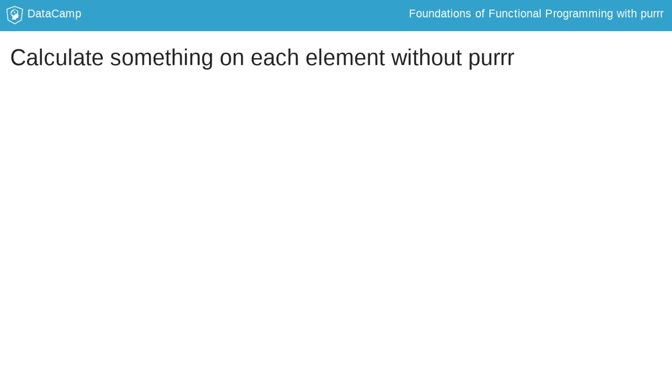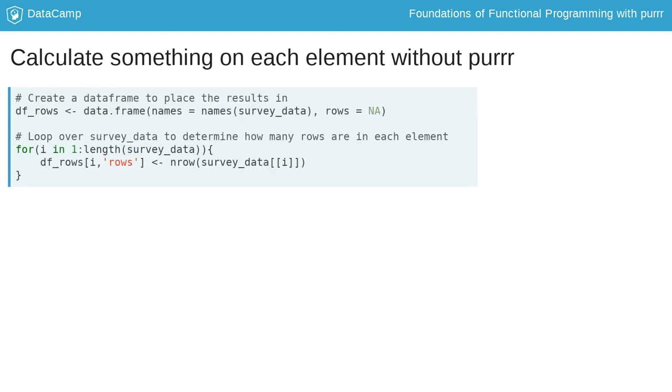Let's walk through another example where we compare for loops and purrr functions to solve a problem. We want to know how many rows are in each element of a list. In this case, each element of our list, survey_data, is the results of two weeks of counts of frogs from wetlands on Lake Erie. Each element should have 14 rows, one row for each day in the two-week survey.